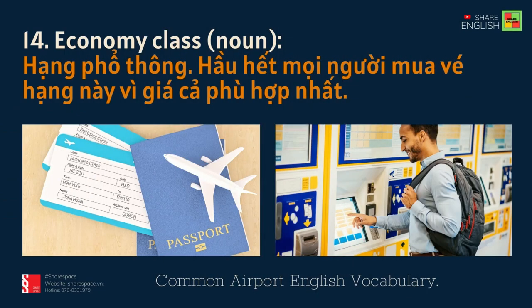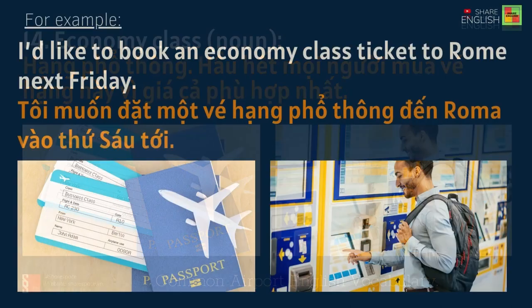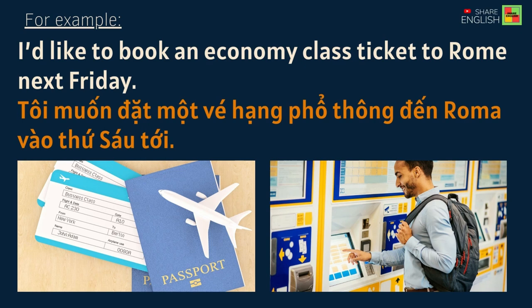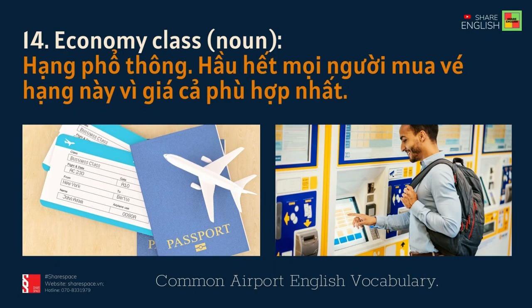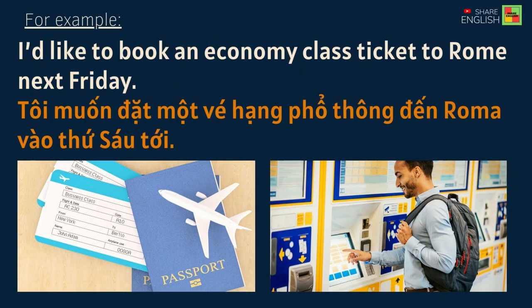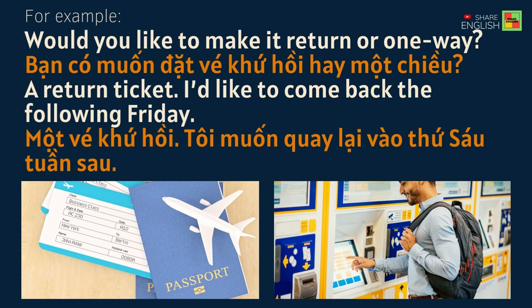14. Economy Class. For example: I'd like to book an Economy Class ticket to Rome next Friday. Would you like to make it return or one-way? A return ticket — I'd like to come back the following Friday.